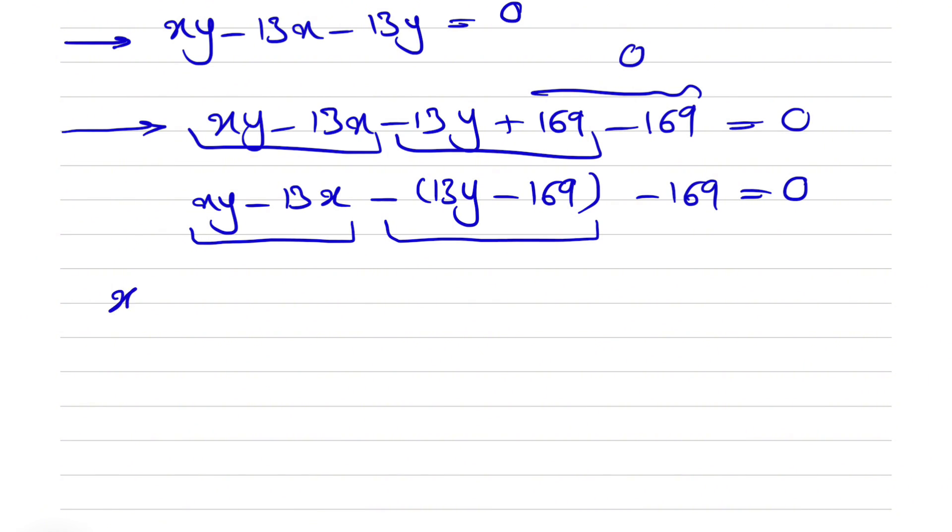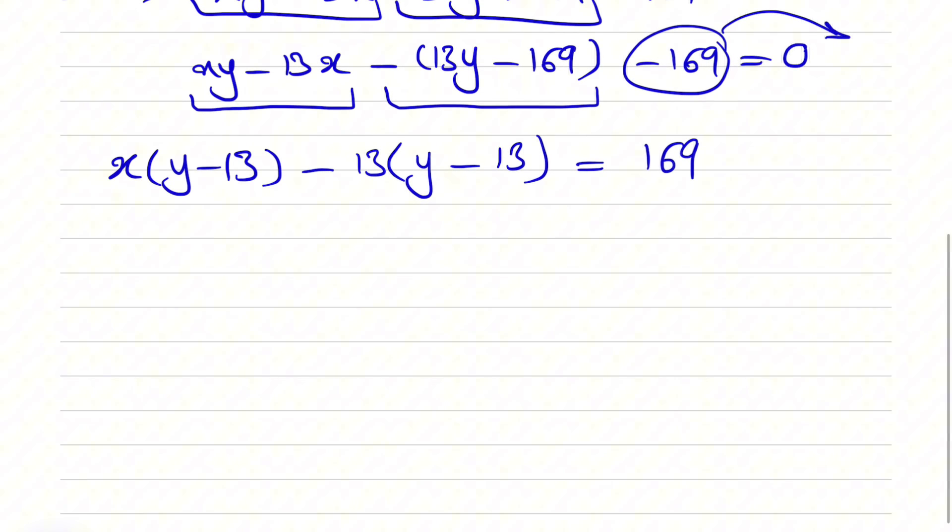So from the first one, if you factor x, we'll have y minus 13. And in the second one, we're just going to factor 13 in there and we have y minus 13. So we're going to bring the 169 on the right side, so it will be positive after that. And now we see the common factor y minus 13 here. So we can factor y minus 13. And from the first one, we have x and second one, we have minus 13 is equal to 169.